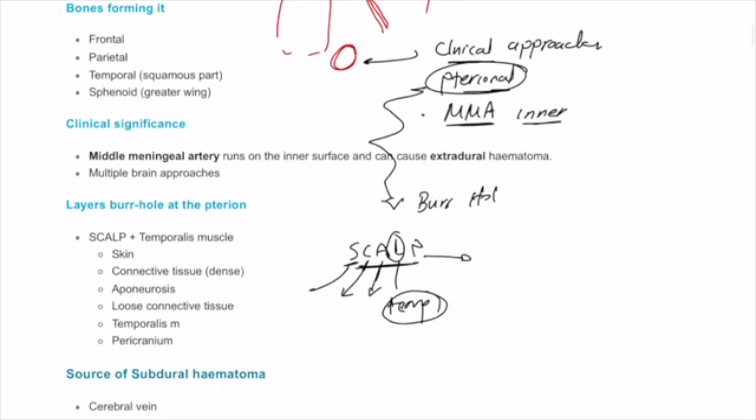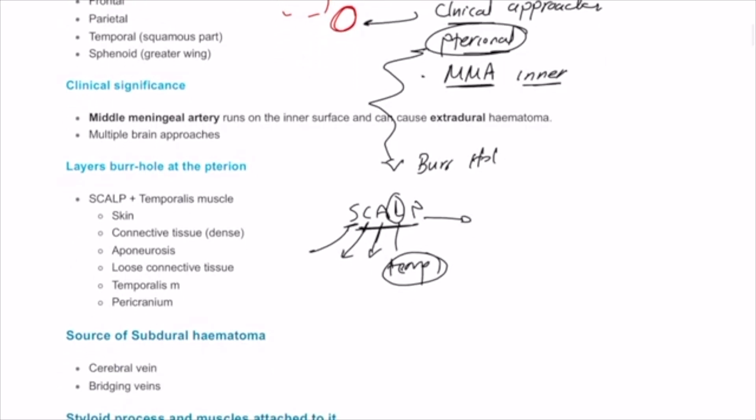The source of subdural hematoma, subdural hematoma usually the source is the bridging veins. For example, this is the bone and below the bone or very adherent to the bone you will have the dura, just very adherent to it, and this is the subdural space over the arachnoid mater.